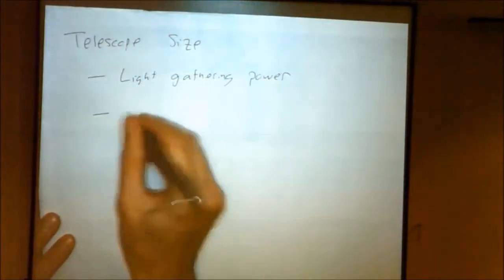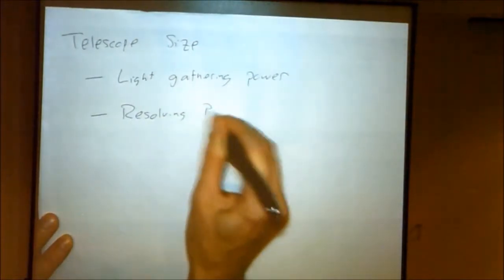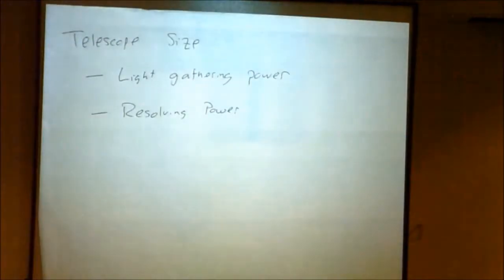We'll talk about light gathering power today, and the other one is resolving power, which is basically how much your image is blurred out. There's a fraction off the edges of any mirror that blurs out your image, but the bigger the telescope is, the less blurred it is. We'll save that one. Let's talk about light gathering power.